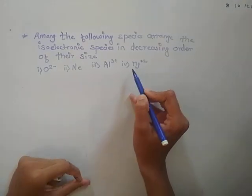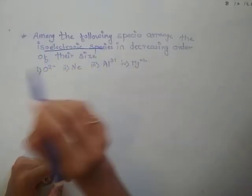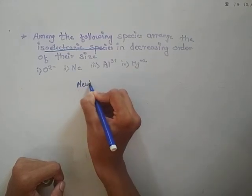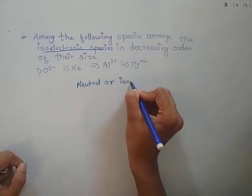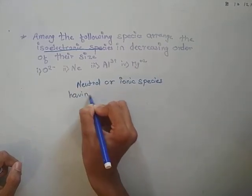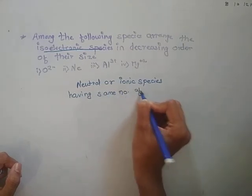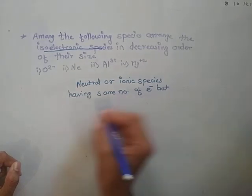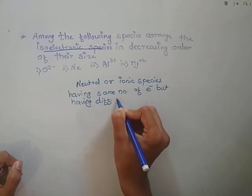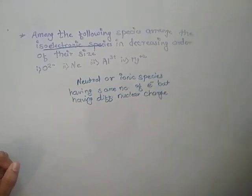Now we will discuss what isoelectronic species are. Isoelectronic species are neutral or ionic species having the same number of electrons but having different nuclear charges.